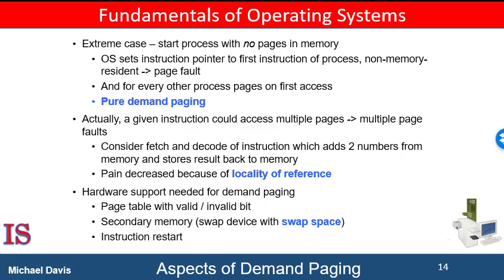Theoretically, some programs could access several pages of memory with each instruction execution — one page for the instruction and several pages for data — possibly causing multiple page faults per instruction, which would result in unacceptable system performance. Fortunately, analysis of running processes shows this behavior is very unlikely. Programs tend to have locality of reference, which results in reasonable performance for demand paging.